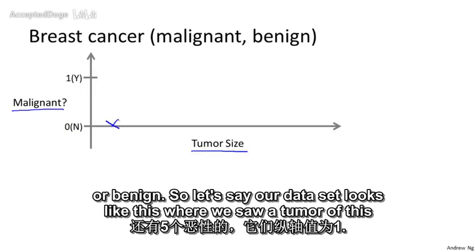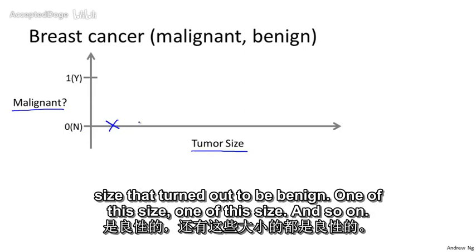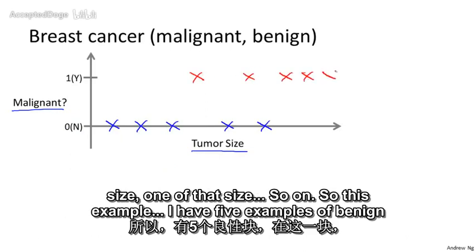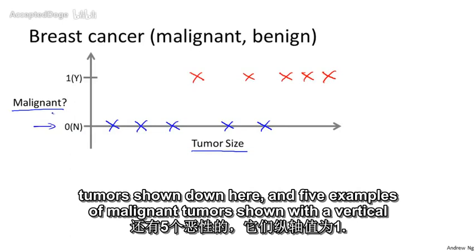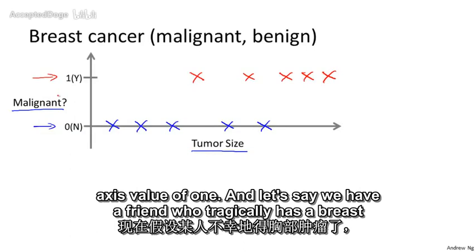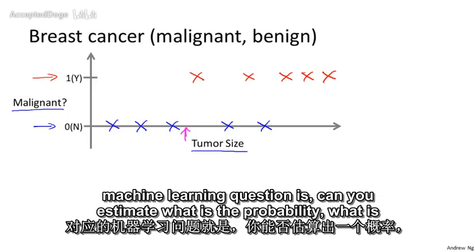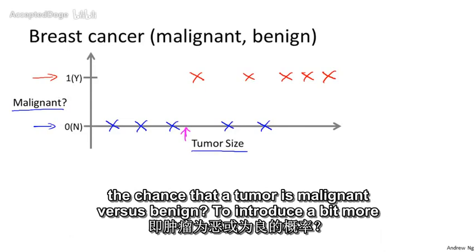Your dataset might look like this, where you saw tumors of various sizes that turned out to be benign, and sadly also a few malignant tumors. In this example, there are five examples of benign tumors and five examples of malignant tumors. If a friend has a breast tumor of a certain size, the machine learning question is: can you estimate the probability that the tumor is malignant versus benign?